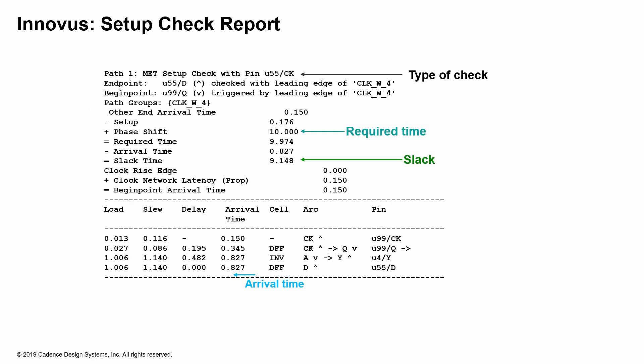The example report shown here is generated from the Innovus implementation system, and it starts out with whether that particular path met or violated. In this example, it has met the timing, so the check is passed. It also shows the end point and the begin point, meaning the start point, and what clock is actually triggering it. Both cases are being triggered with the leading edge of clock W4. The tool has some built-in grouping of paths, mentioning a path grouping called clock W4.